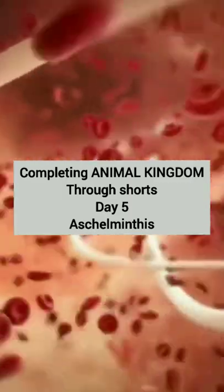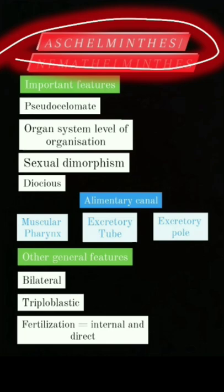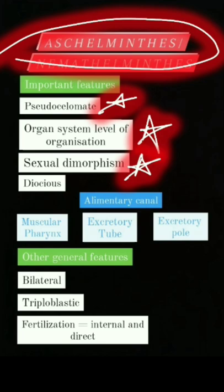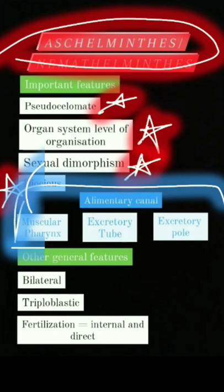Completing Animal Kingdom through shots, Day 5 - Aschelminthes. Important features of Aschelminthes: pseudocoelomate, organ system level of organization, sexual dimorphism, dioecious, alimentary canal with muscular body, advanced sex determination.